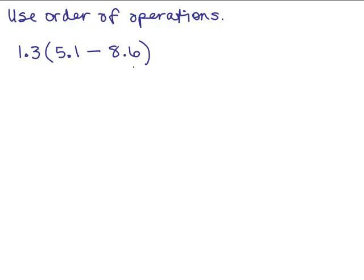We're going to simplify this using the order of operations. The first thing in the order of operations is to simplify within the parentheses. So I need to do 5.1 minus 8.6. You've got a small number minus a bigger number, so let's rewrite that subtraction as 5.1 plus a negative 8.6.